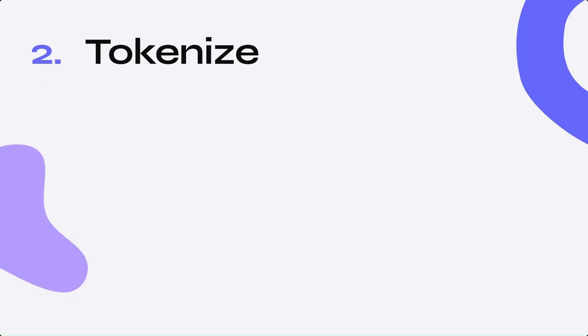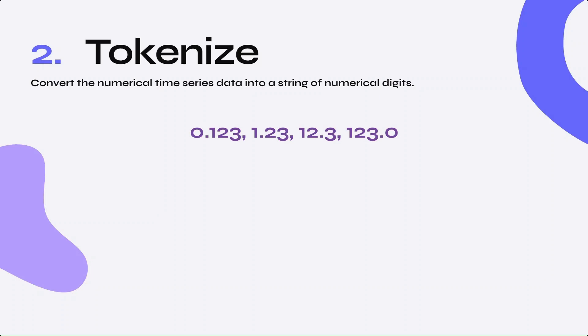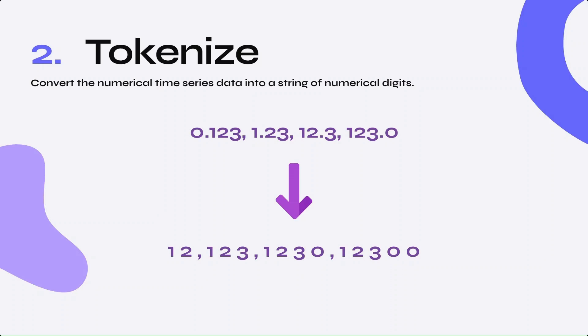The second step is to tokenize the data. This involves converting the numerical time series data into a string of numerical digits. Tokenization breaks down the encoded time series data into smaller units that the language model can understand. Byte pair encoding, or BPE, is a commonly used tokenization technique. However, the authors discovered that BPE breaks single numbers into awkward chunks that don't align with the digits, making arithmetic operations more difficult and affecting the model's ability to learn patterns accurately. Instead, the authors decided to separate digits with spaces and time steps with commas to force separate tokenization of each digit, ensuring the model does not output a weird token during sampling.